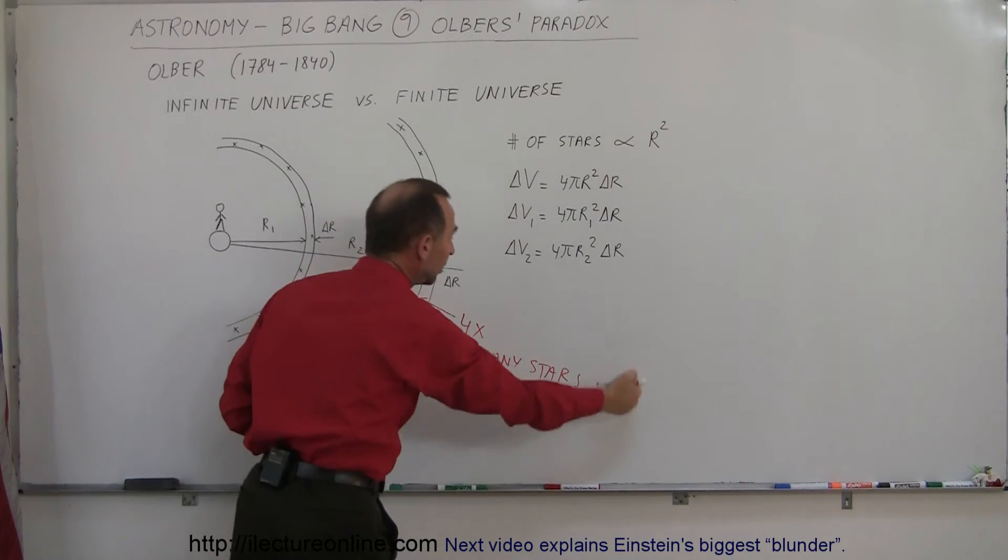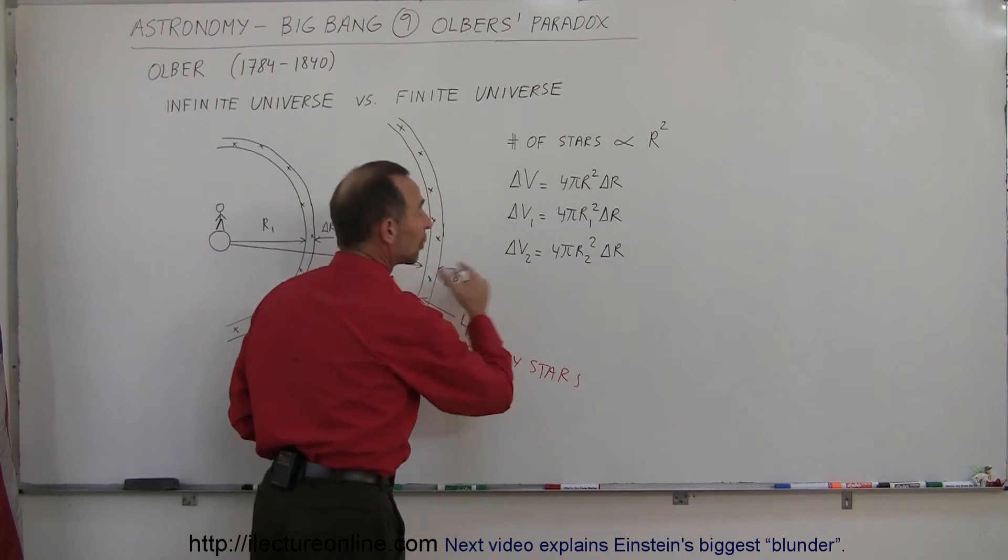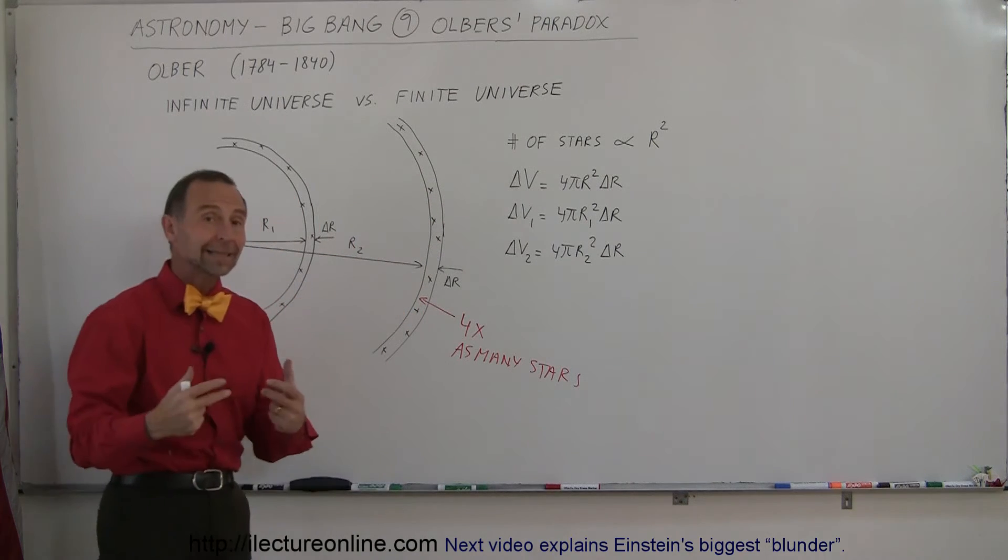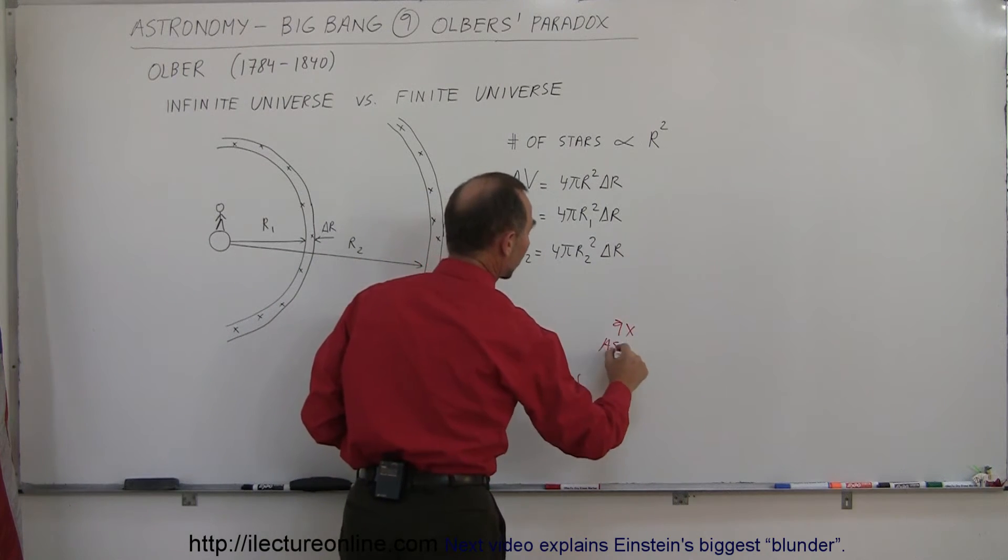Likewise, if we had a third shell that was three billion light years away with a thickness of one light year, three times as far away would be nine times the volume, and therefore nine times as many stars, and so forth.